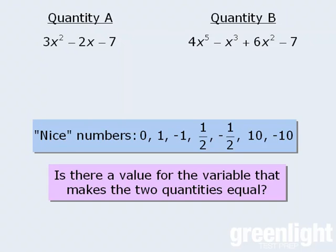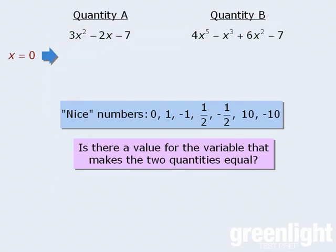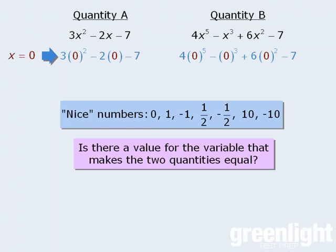Now, notice that when we examine the question here, we see that both expressions have a constant term of negative 7, and the remaining terms all have x's in them. So we can make all of these terms evaluate to be 0 if we let x equal 0. If x equals 0, then we'll plug 0 into the two quantities and evaluate them. So when x equals 0, the two quantities are equal.